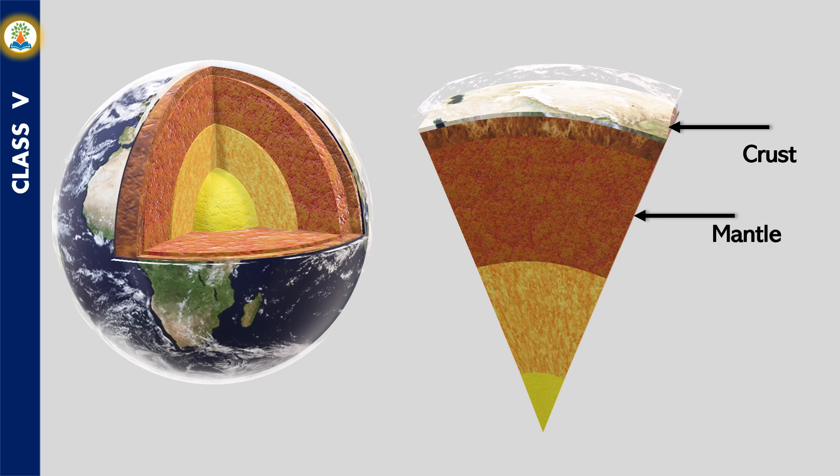Mantle is the layer that lies below the crust. Its upper part is made up of solid rocks and the inner part is made up of molten rocks.